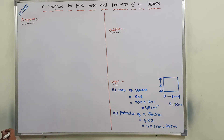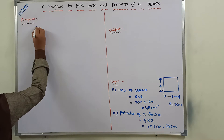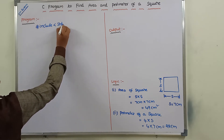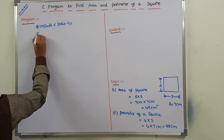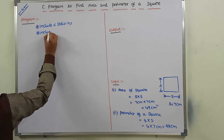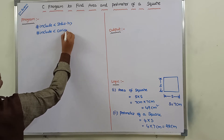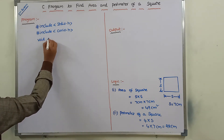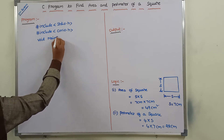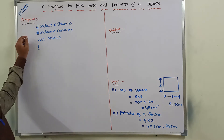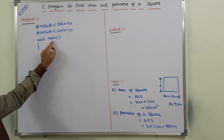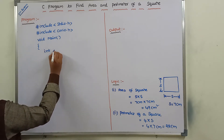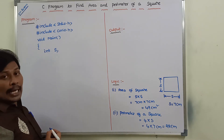So, hash include stdio.h — standard input output header file — and hash include conio.h — console input output header file. Every C program starts its execution with the main function. Since the main function does not return anything, we write void before the main function, where void is an empty data type. Next, I am declaring the variables: int s, where s is the length of one side.